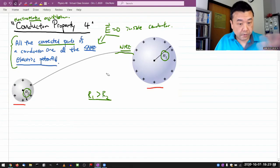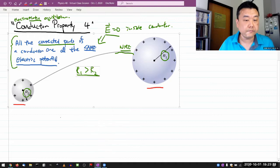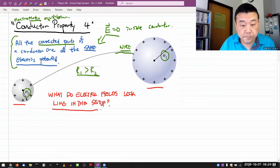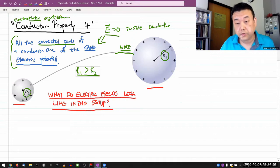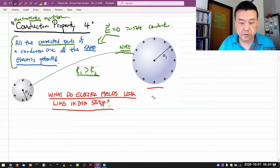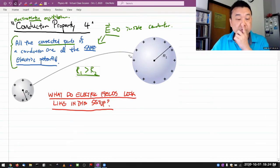I want to analyze this setup, and what we're ultimately interested in are the properties of electric fields in this setup. What do electric fields look like? I want to point out some pitfalls that I want you to avoid, or recognize and not fall into the pit.